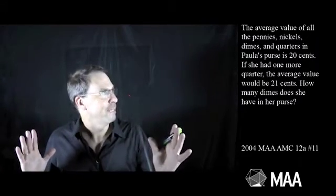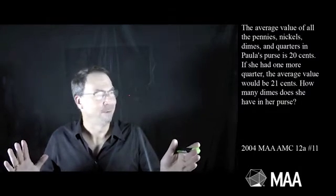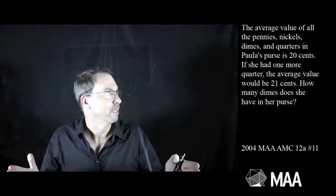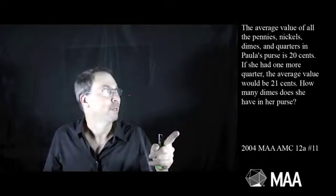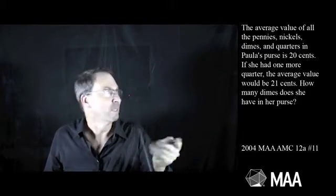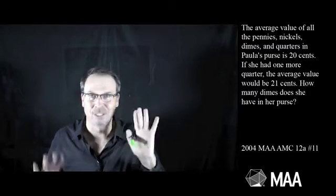So actually, this is curious. 20 cents and 21 cents seem awfully low to me for a whole bunch of coins in one's purse. And adding one more quarter, which is worth a lot, increased the average amount by one cent from 20 to 21 cents. This just feels odd to me.